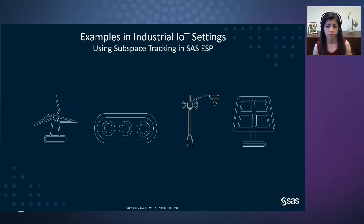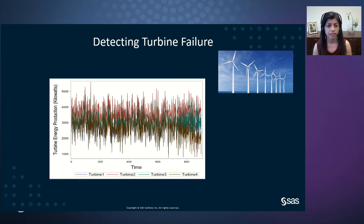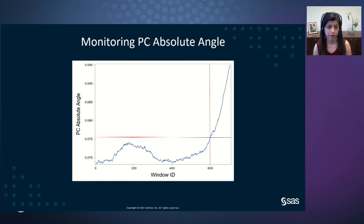Now let's take a look at some examples where we use subspace tracking to detect anomalies and degradation. We use SAS Event Stream Processing, which has embedded analytical tools like subspace tracking. The first example is to detect degradation in wind turbines. This is a simulated example where the input data is the hourly kilowatt energy generated from four wind turbines operating in the same wind field. The data is simulated such that at hour 600, turbine number four starts to degrade. When we use subspace tracking in SAS ESP and monitor the PC absolute angle change, we can clearly see the increase in the angle when turbine four starts to degrade.